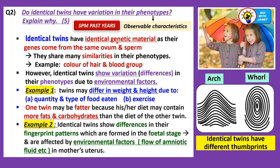Identical twins actually have identical genetic material as their genes come from the same ovum and sperm. In the formation of identical twins, one ovum is fertilized by one sperm to produce a zygote that develops into an embryo, but the embryo splits into two parts. Both embryos then grow to become different individuals, but they are identical twins because they come from the same ovum and sperm and have the identical genetic material.